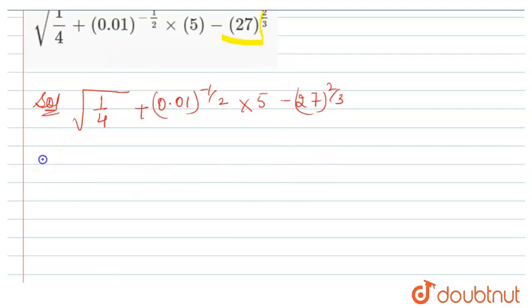So here we can write it as under root. Here 1 is a square of 1 and 4 is a square of 2. So we can write it as whole square of 1 by 2 plus.